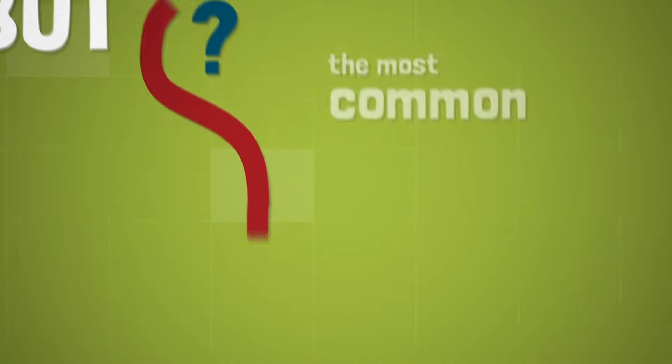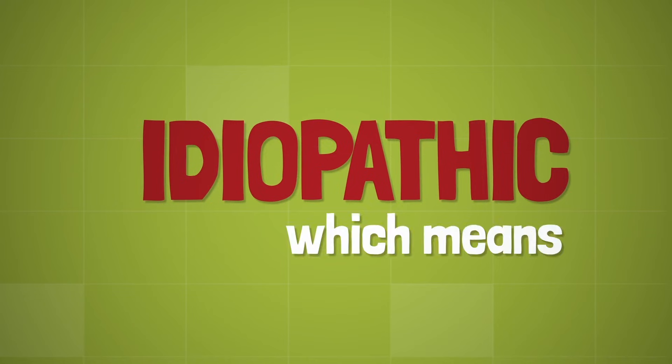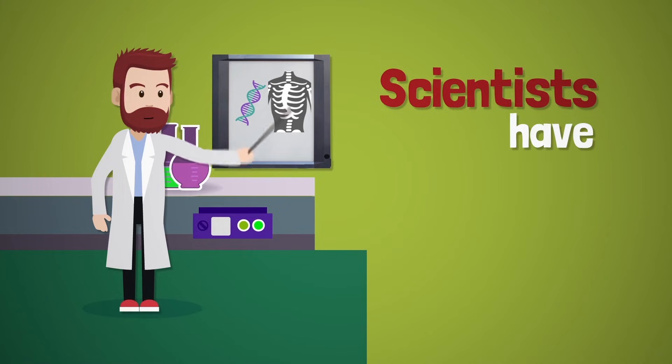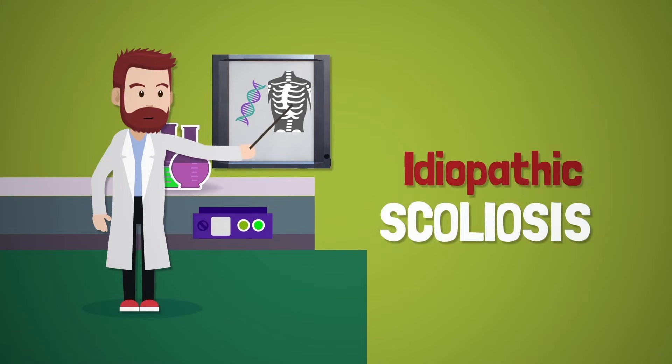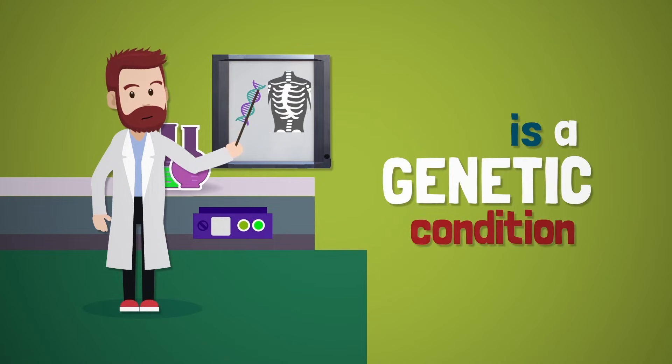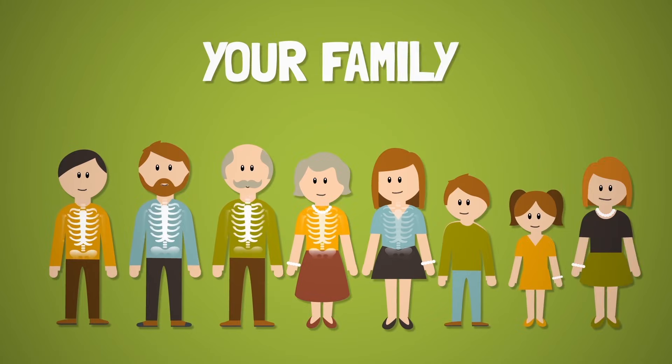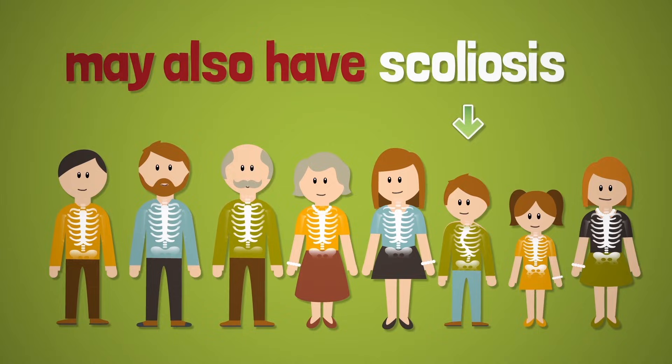Scoliosis can arise from a number of underlying conditions, but the most common form is idiopathic, which means cause unknown. Scientists have identified that idiopathic scoliosis is a genetic condition. This means that it is possible that your family members may also have scoliosis.